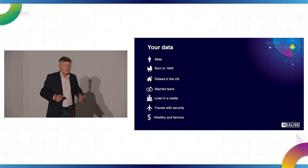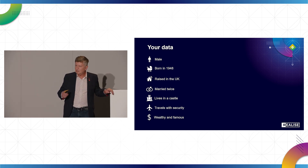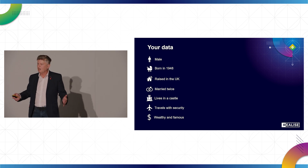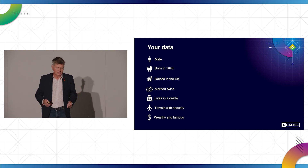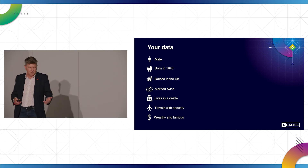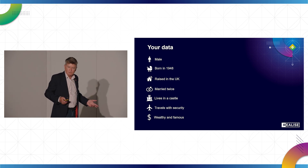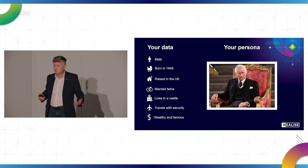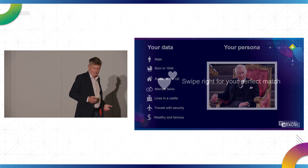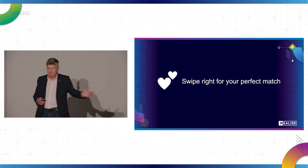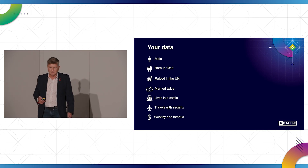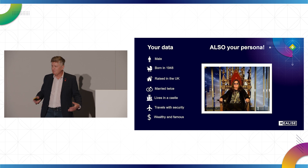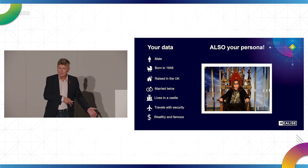Any marketeers in the room will understand the term persona — a way of defining our ideal target audience. Here we have one: a man born in 1948, raised in the UK, married twice, lives in a castle, travels with security, wealthy and famous. That persona could be King Charles. But in the world of online dating, if we swipe right, that same persona could be Ozzy Osbourne. Two very different people, and the conversations you'll have with them are very different, even though their persona is exactly the same.